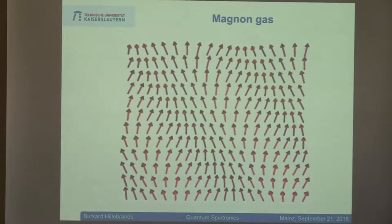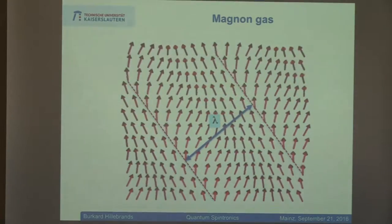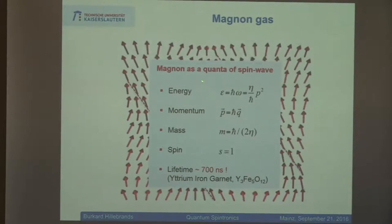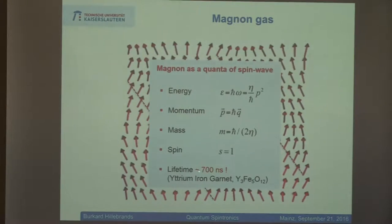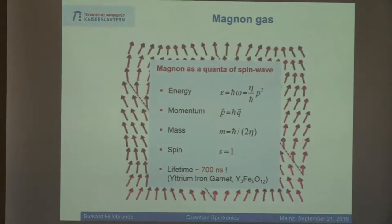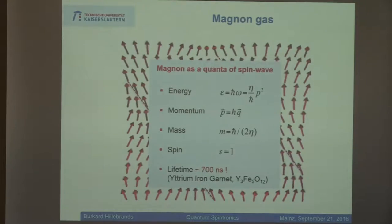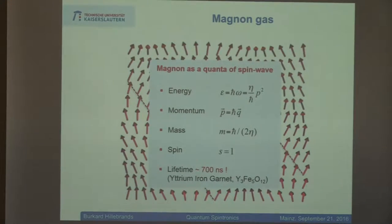Introduction: this is a spin wave. You might notice it has a wavelength. Spin waves can run in any direction, not only parallel or perpendicular to the spins. We can consider the magnons as the quanta of the spin waves. They have energy given by the exchange constant eta, they have linear momentum, they have mass, they have spin. They also have a lifetime typically of the order of several hundred nanoseconds. That is good because you have to compare this to the intrinsic time scales needed to thermalize a gas of magnons. This lifetime is long enough so that we can really observe the system converging towards an equilibrium situation.